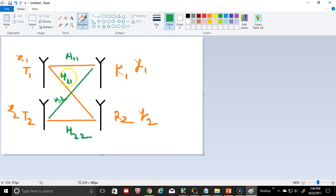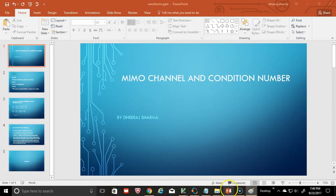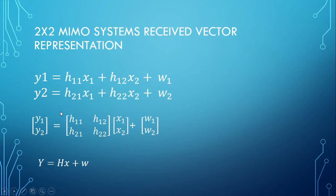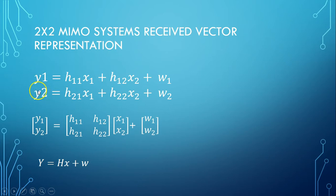Both antennas can be represented in terms of a linear system of equations. We have channel elements h11, h12, transmit signals x1 and x2, and receive signals y1 and y2. This can be written in compact matrix form as y = Hx + w, where w is noise. The task of the receiver is to first estimate the channel and then estimate the transmitted signal.